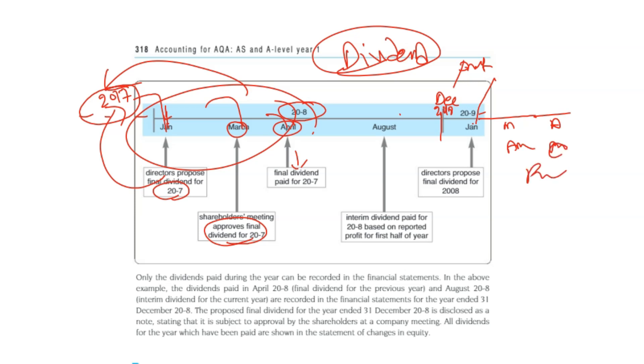Interim dividend is half-yearly. It is paid based on the 2018 reported profit for the first half of the year, and paid in August. Hope it helps.